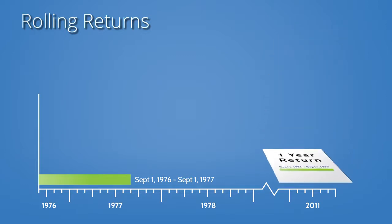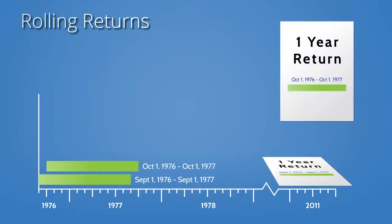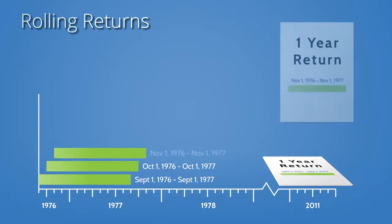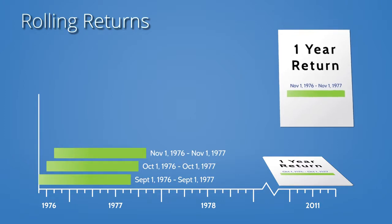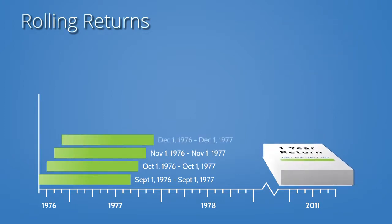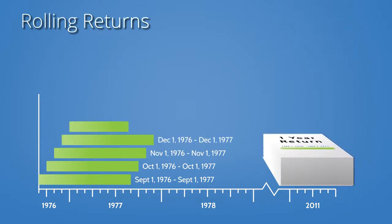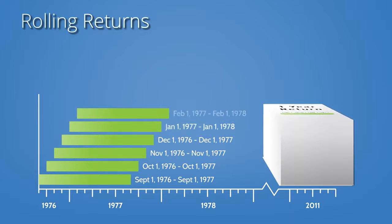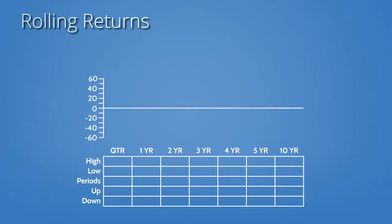Then we calculated the full year return if the investment had instead been made on October 1, 1976. Then we calculated the annual return starting on November 1, 1976. We keep making these 12-month calculations at the start of every month through June 30, 2010. In other words, we calculated 406 one-year trailing period returns.